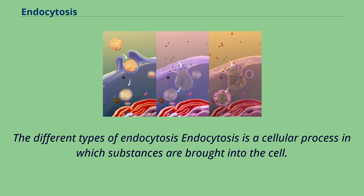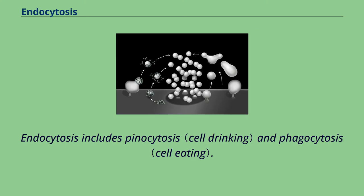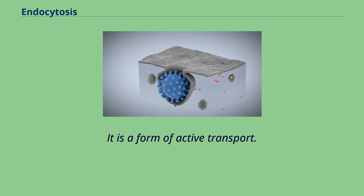Endocytosis is a cellular process in which substances are brought into the cell. The material to be internalized is surrounded by an area of cell membrane, which then buds off inside the cell to form a vesicle containing the ingested material. Endocytosis includes pinocytosis and phagocytosis, and it is a form of active transport.